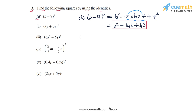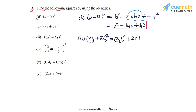Now we go to part 2. In part 2, we have to calculate xy plus 3z whole square. This is of the form a plus b whole square, which can be expanded as a squared plus 2ab plus b squared. So we expand this as xy whole square plus 2 times xy times 3z, and then 3z whole square.